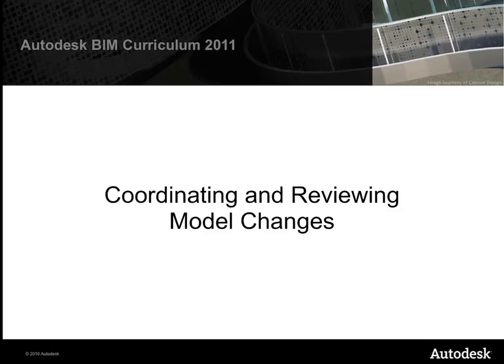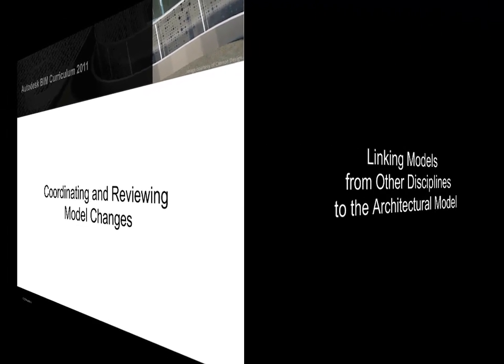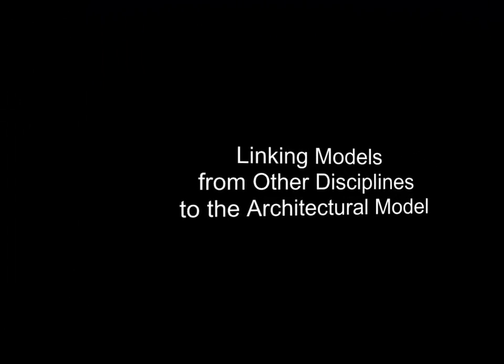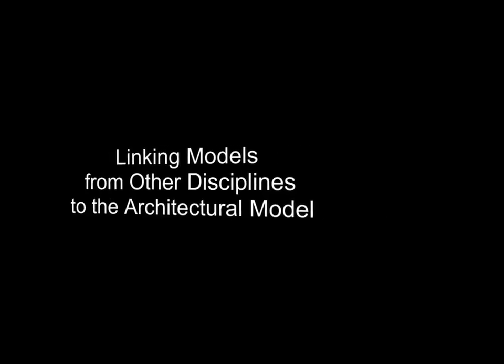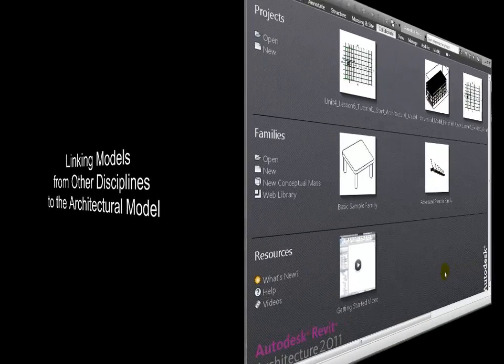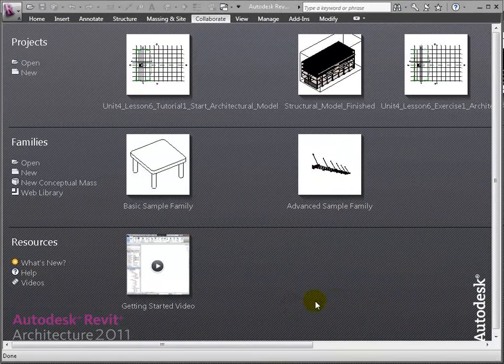When the members of the design team have completed their design of the structural, electrical, plumbing, and HVAC systems, they can share their models so that the changes they've made can be reviewed and coordinated. We'll start by linking the Revit structure model back into the architectural model so we can find the changes and act upon them.